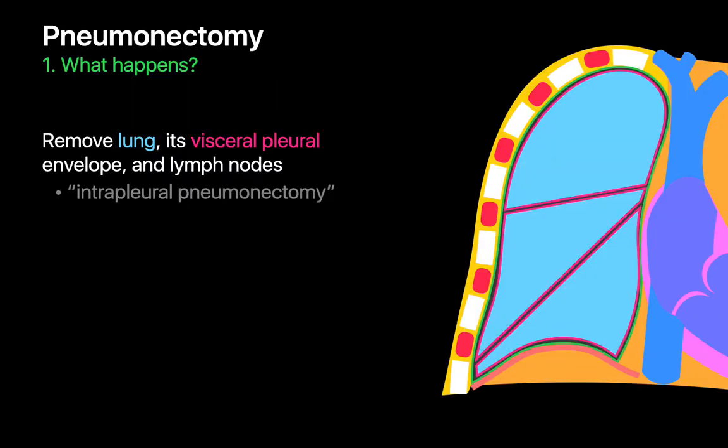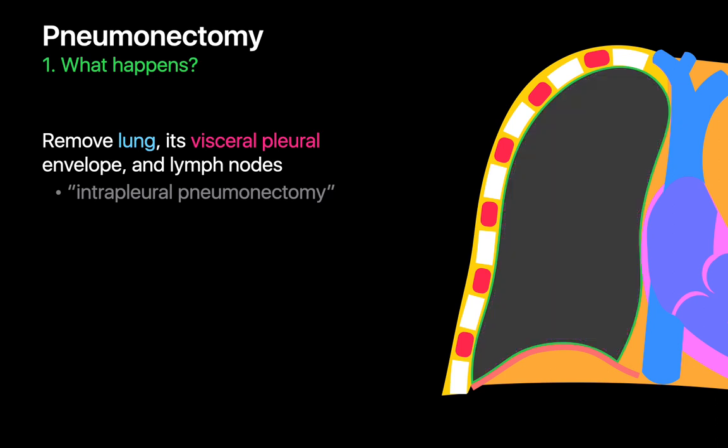In a pneumonectomy, the right or left pulmonary artery, central pulmonary veins, and mainstem bronchus are transected, and the entire lung is removed along with the visceral pleural membrane — we refer to this as an intrapleural pneumonectomy. Some nearby lymph nodes may also be removed.